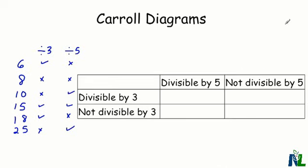Carroll diagrams are another useful tool for sorting numbers based on their divisibility. Again, I have my organizer for divisibility based on three and five, and let's start with six. Six is divisible by three, but not divisible by five, so we're going to put it here — divisible by three, but not five.